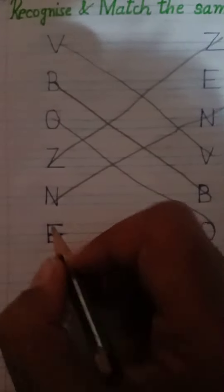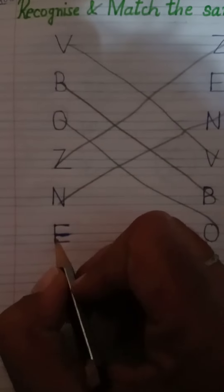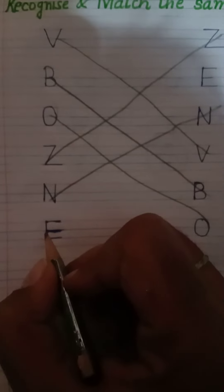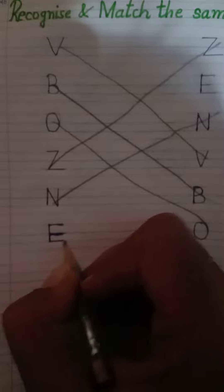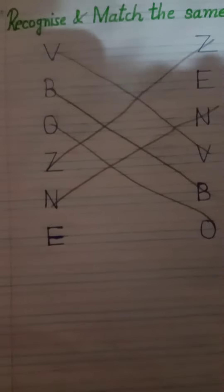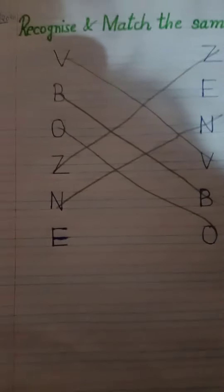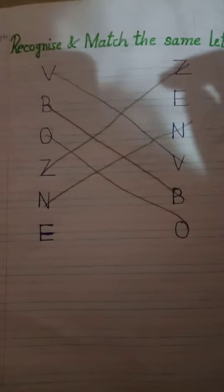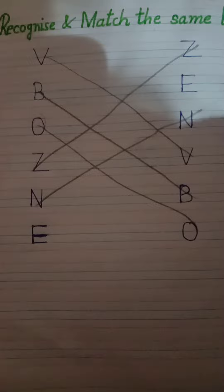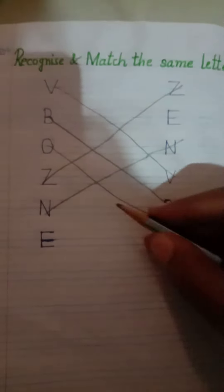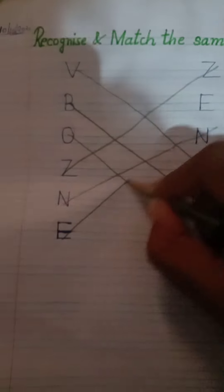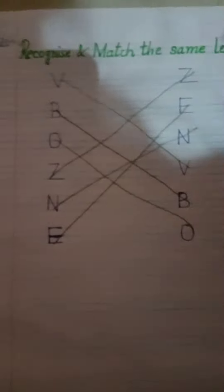One standing line, sleeping line, again sleeping line, and one more sleeping line — it's a letter E. Where is the letter E? Yes, it's a letter E! So match the E with E.